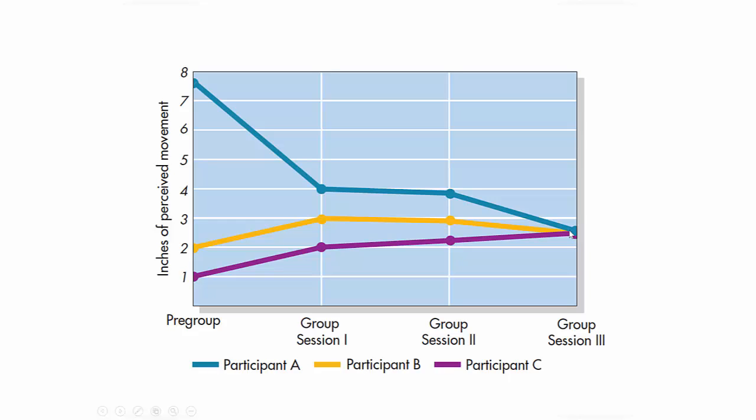Until this point, researchers had never seen a norm develop before their eyes. This procedure demonstrated that norm formation is a byproduct of social influence. Sherif also used confederates who provided unusually high estimates to inflate the group norm, and documented that the confederates' influence persisted for up to five generations of group membership. There's even evidence that confederates continued to influence participants when tested alone up to one year later — remarkable, given that the light never moved at all.